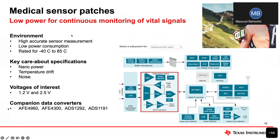The first application example is medical sensor patches. REF35's low power consumption actually eliminates the need for sampling in some of these applications, so you can use it for continuous monitoring of vital signals in the patient. In these applications, there's typically an ECG front end with FPGA and ADC, and the voltage reference such as REF35 is used to provide a precise signal to the data converter block. We commonly see 1.2 and 2.5 volt references used here, with companion data converters including the AFE4960, 4300, ADS1292, and ADS1191.